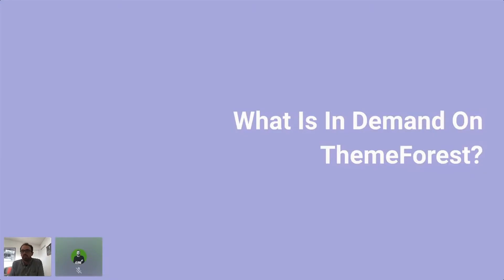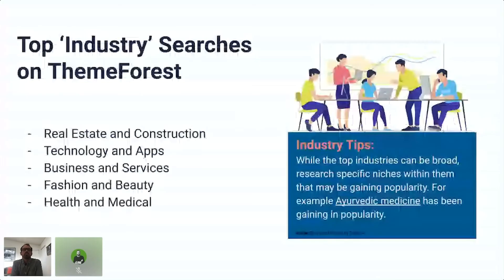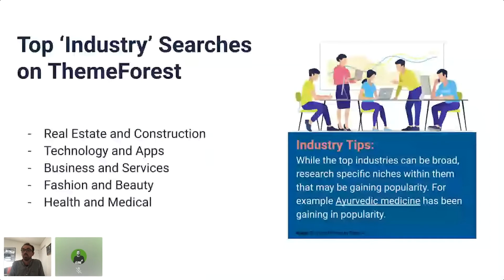I'd like to spend a little bit of time now and focus on ThemeForest in particular. The key way people are searching for items on ThemeForest is by either searching for an industry or by searching for particular features. We know that industry-related searches play such an important role on web and code shopfronts. So what are the top industries? We've got five listed here: real estate, technology, business and services, fashion and beauty, and health and medical. Over the last year, these five industries have experienced the most search sessions on ThemeForest. While they tend to be very broad industries, they're not only popular at the moment but tend to be consistently in demand. It's really important to invest time to research these industries and see if there are specific niches or business trends within them that might be gaining popularity — a great way to ensure that your products are both unique, on trend, and in demand.